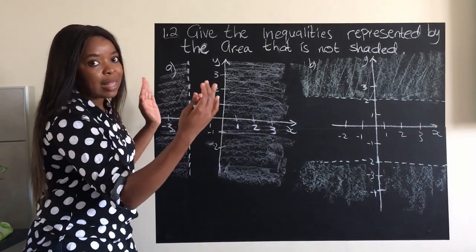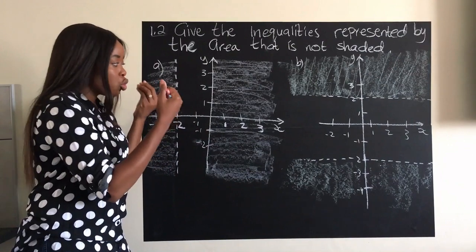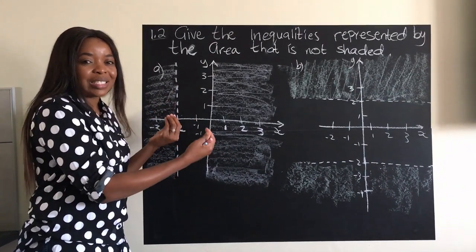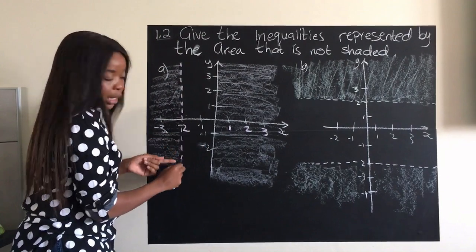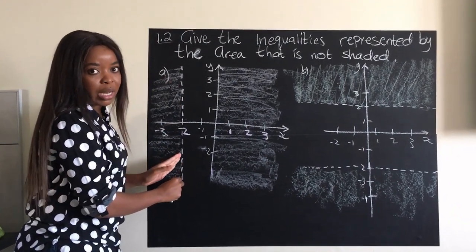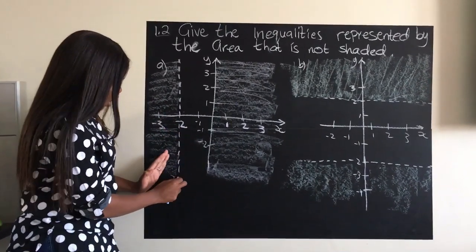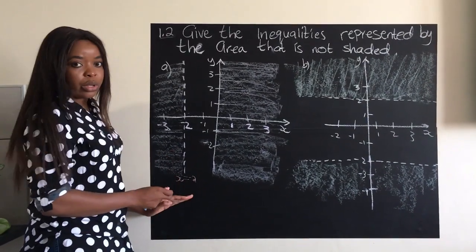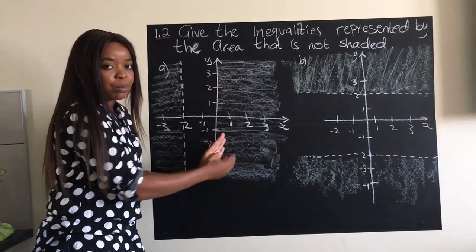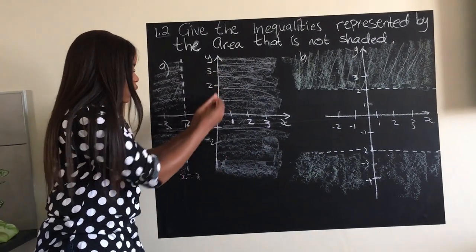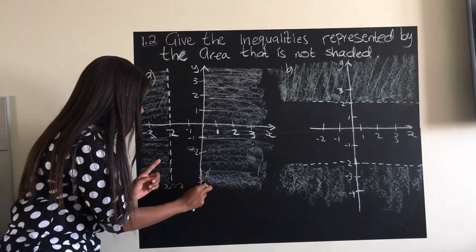Starting with part a: the first thing we want to do is find the numbers and which axis we're looking at, so that you don't use x when you're supposed to use y, or vice versa. Look at which axis is cut by the lines from which the shading took place. Here we have a broken line cutting the x-axis, so we'll use x. This line is x equals negative 2, and the y-axis gives us x equals zero.